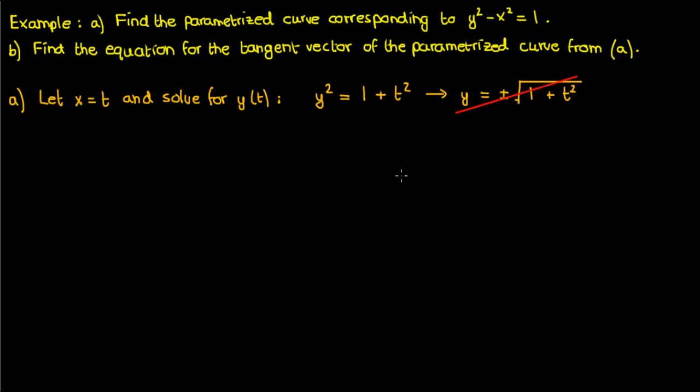But we'd prefer not to do that because if I substitute a single value of t into the parametric equation for y then I can either get a positive number or negative number which kind of goes against the definition of a function. We can't have two possible outputs for a single input.